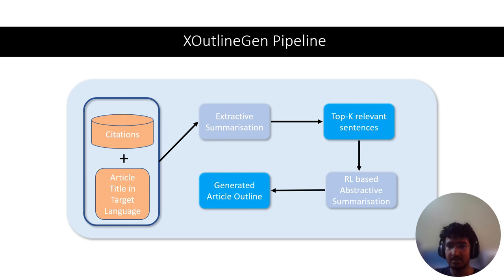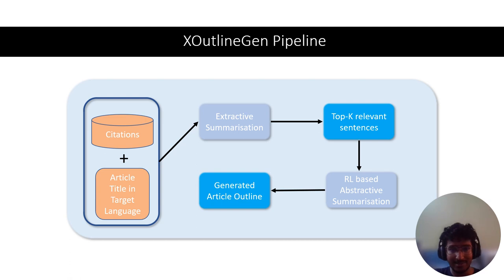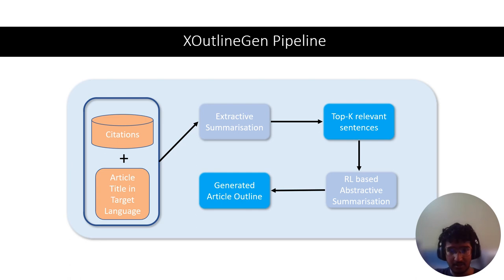For our problem statement, we take citations and article titles in the target language as input — for example, Amitabh Bachchan in Hindi with all citations from that Wikipedia article — and our goal is to generate the final outline. The first step is unsupervised extractive summarization of all citations, since we cannot feed 100 documents spanning over 1000 sentences to a single model. This unsupervised approach is necessary because no labeled data exists to supervise this stage.